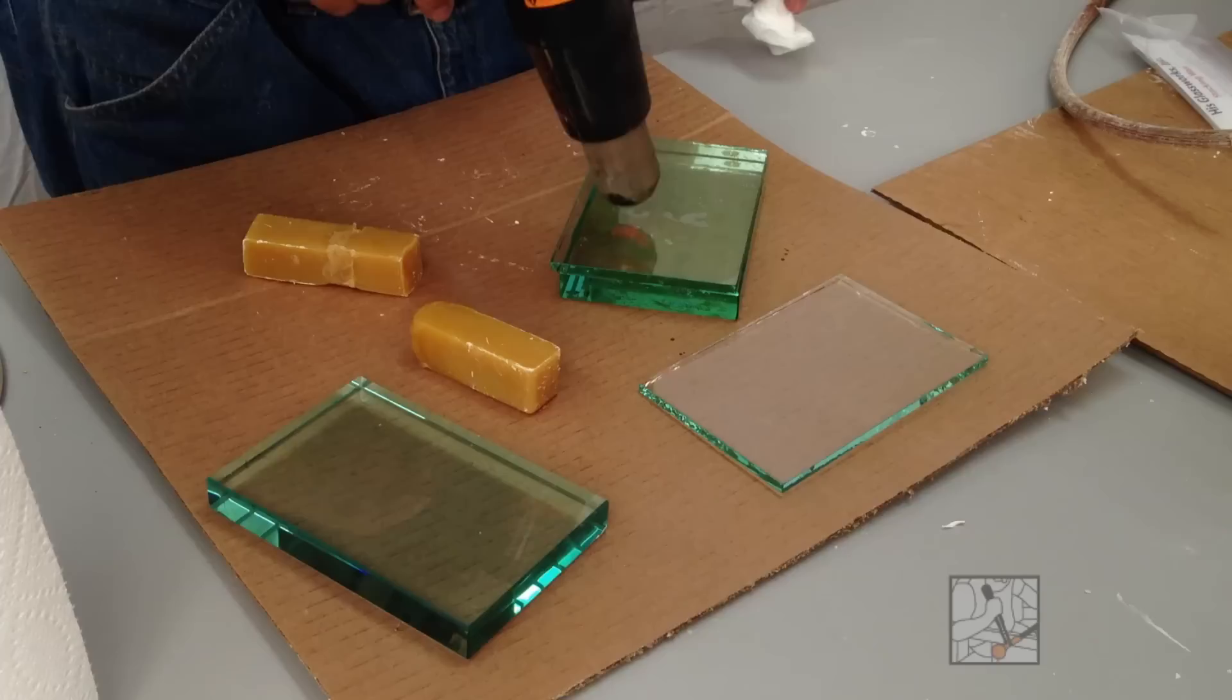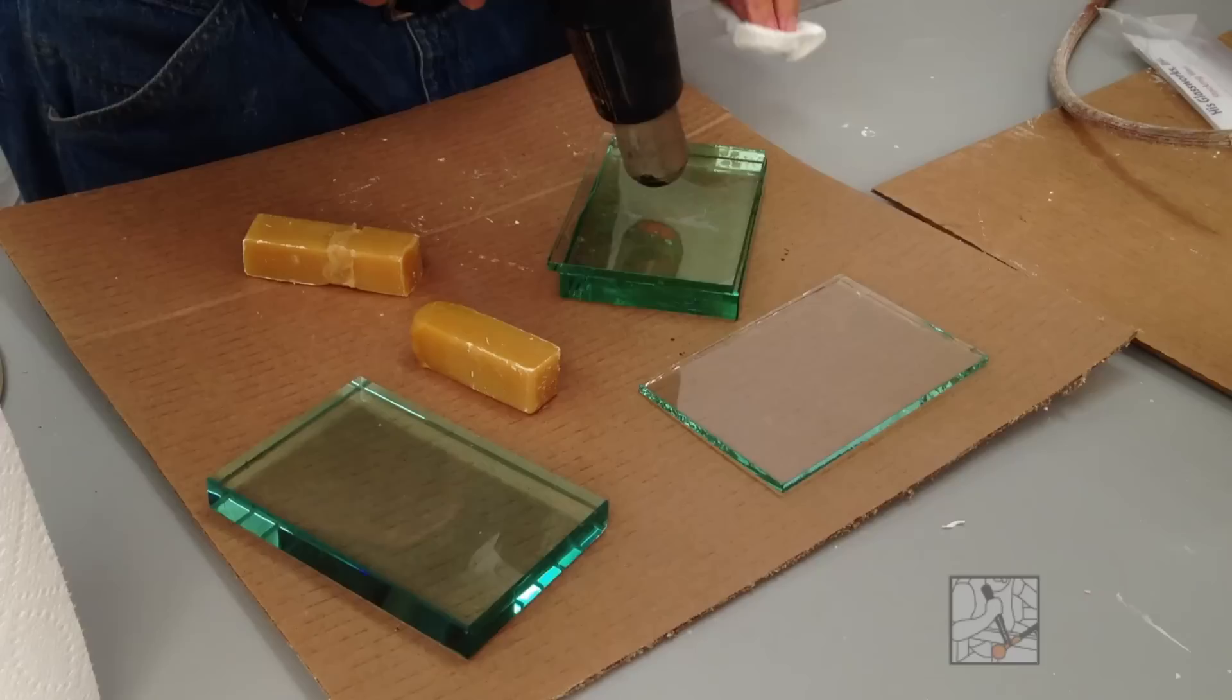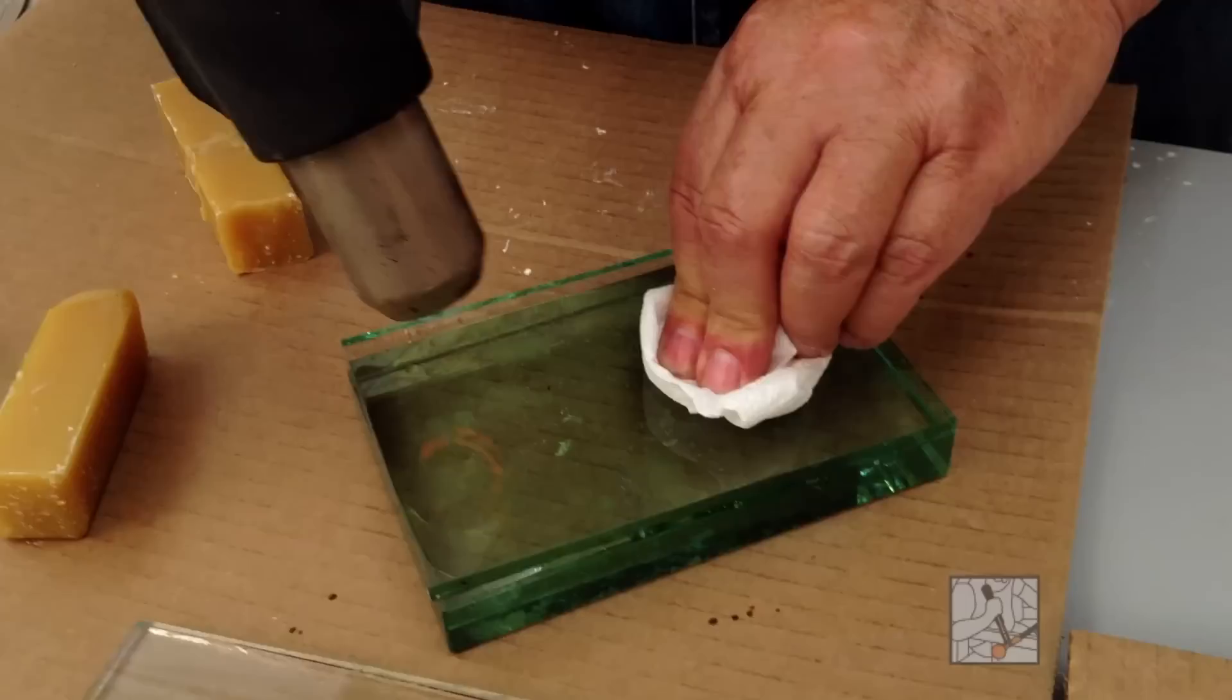If you're only cutting in one particular place, really that's the only place you need to worry about the wax. Since I'm going to do several different illustrations with this block of glass, I want to get most of the bubbles out so that I can use the whole surface.